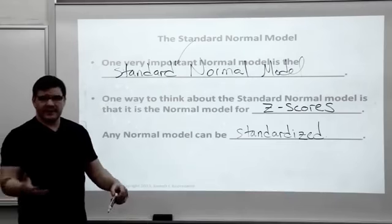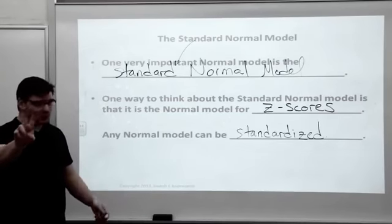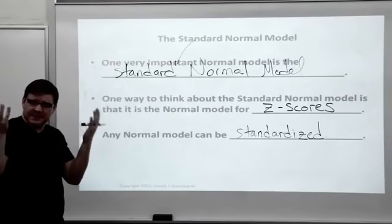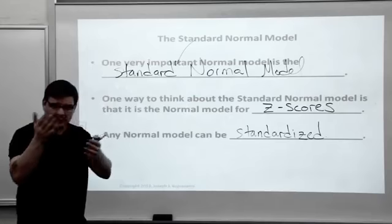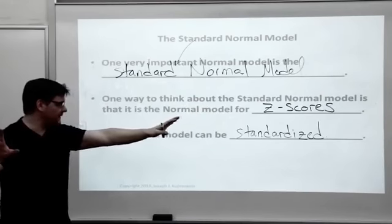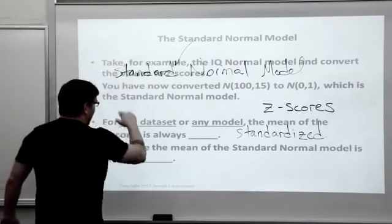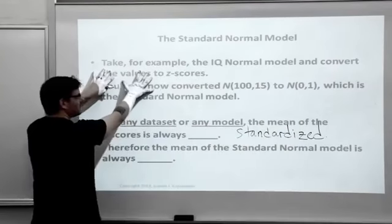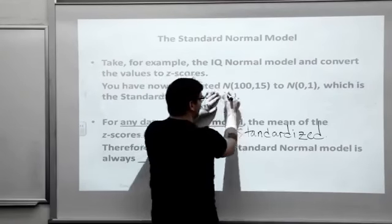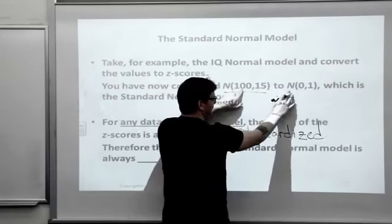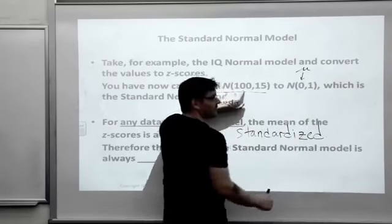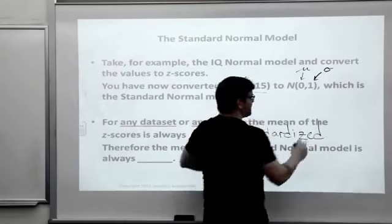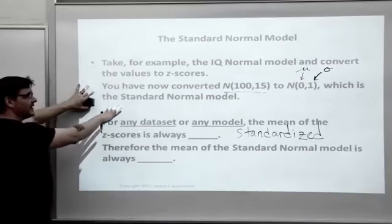Here's where we link Z-scores. What's an unusual IQ score on the high side? That'd be two standard deviations. If the mean IQ is 100, I would jump up two standard deviations to 130. Now we're thinking in terms of Z-scores. I can go from 130 to a Z-score positive 2, and I can think of those simultaneously. Take, for example, the IQ normal model and convert the values to Z-scores. We've converted the normal model with a mean of 100 to a normal model - this is the mean. What's the average Z-score? Zero. What's the standard deviation of Z-scores? Always one. That's the standard normal model.